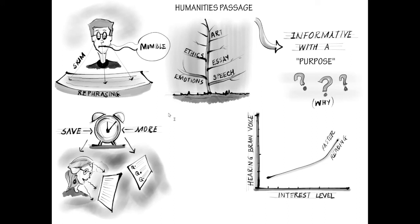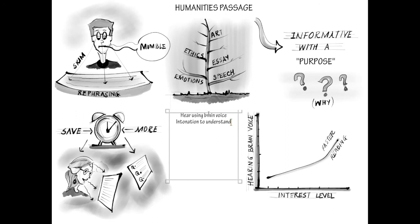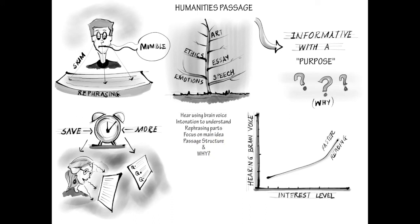So to recap: when reading a humanities passage, you hear most of the words using your brain voice and your intonation to help understand the subtext. When necessary, you check for understanding by rephrasing parts of the passage in your own words using that brain voice. Your primary focus is on the main idea and passage structure, while also looking for why the author wrote this.